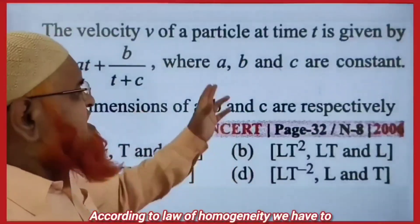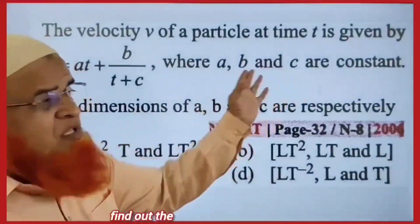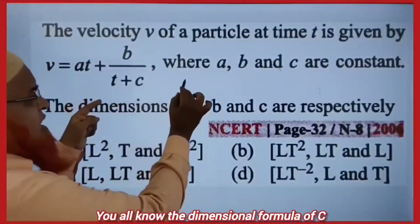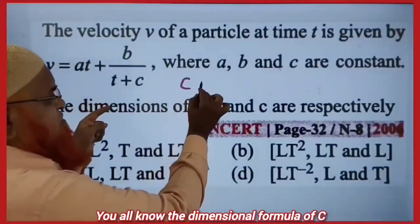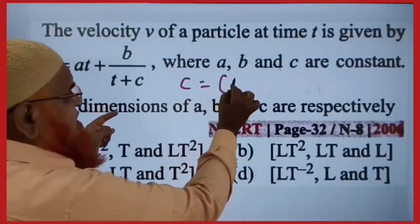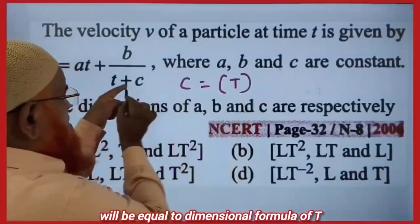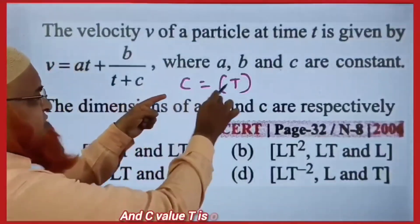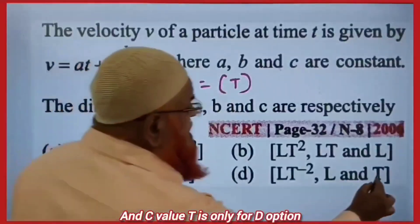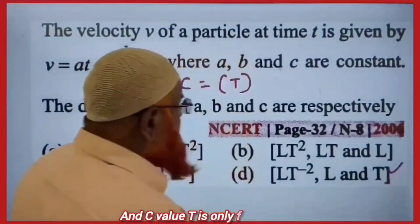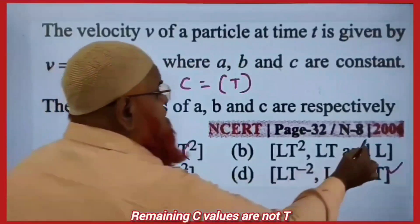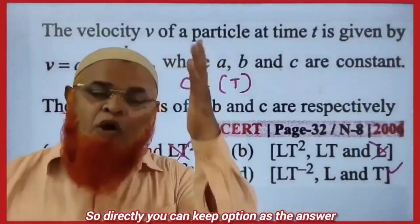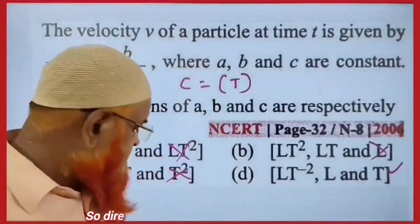According to the law of homogeneity, we have to find the values of A, B, and C. The dimensional formula of C must equal the dimensional formula of T. C equals T only for option D — the remaining C values are not T. So you can directly select option D as the answer.